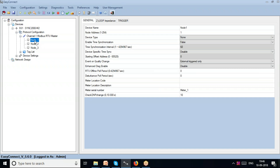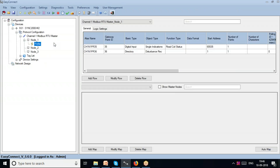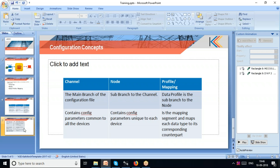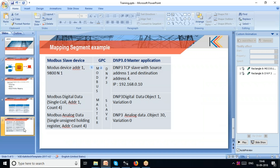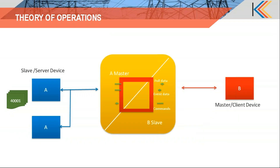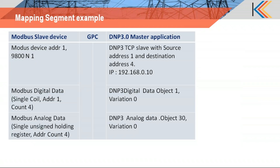After adding three nodes I'll proceed to add a profile. What I'm trying to illustrate using EasyConnect Configuration is to make a configuration file that maps a Modbus slave device to a DNP3 device. For that I need to make a Modbus master and a DNP3 slave. I'm mapping Modbus device address 1 with baud rate 9600, and also adding parity and stop bit.